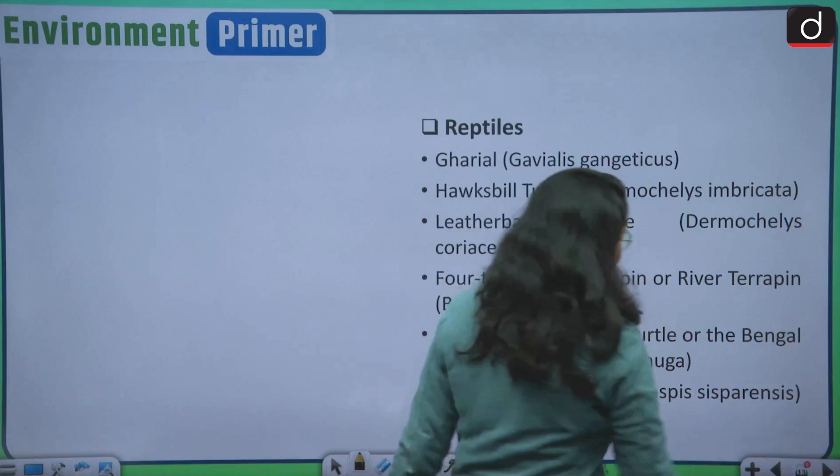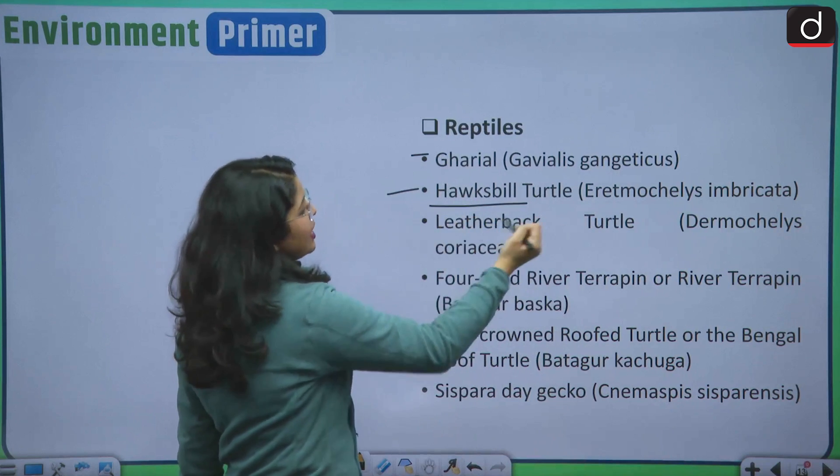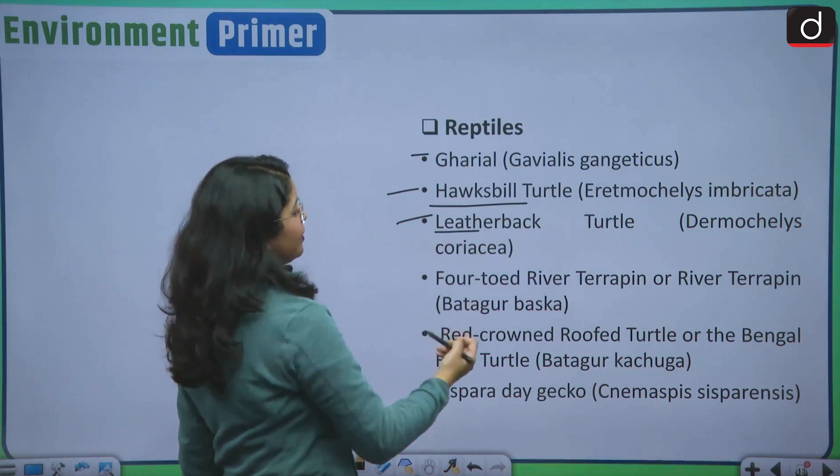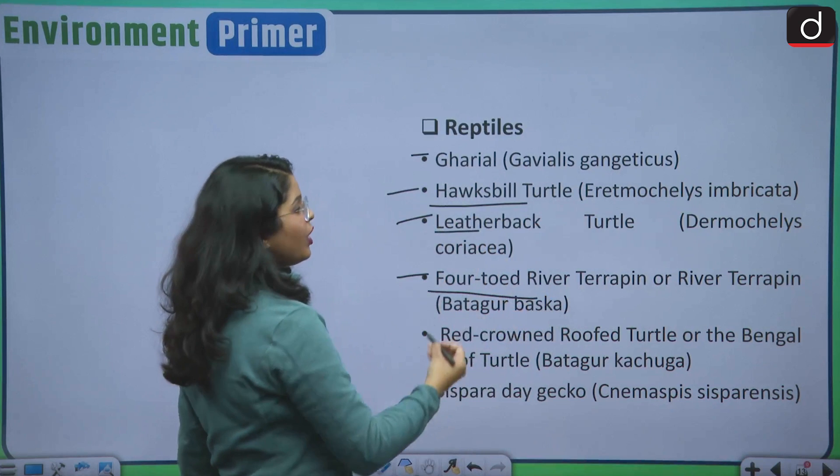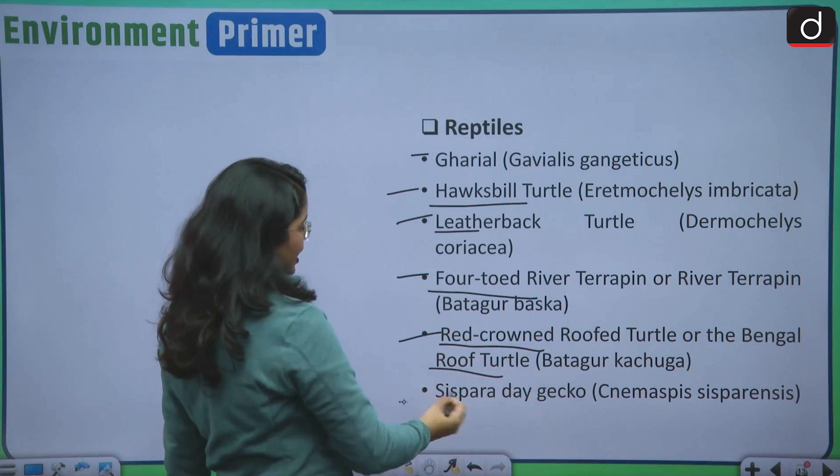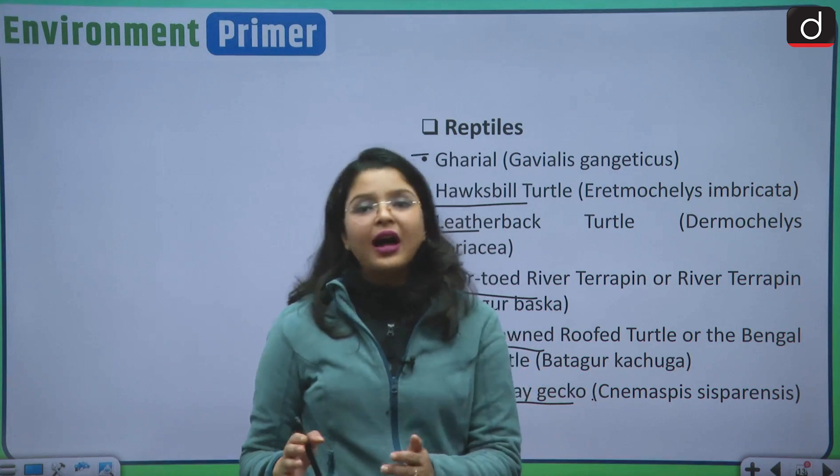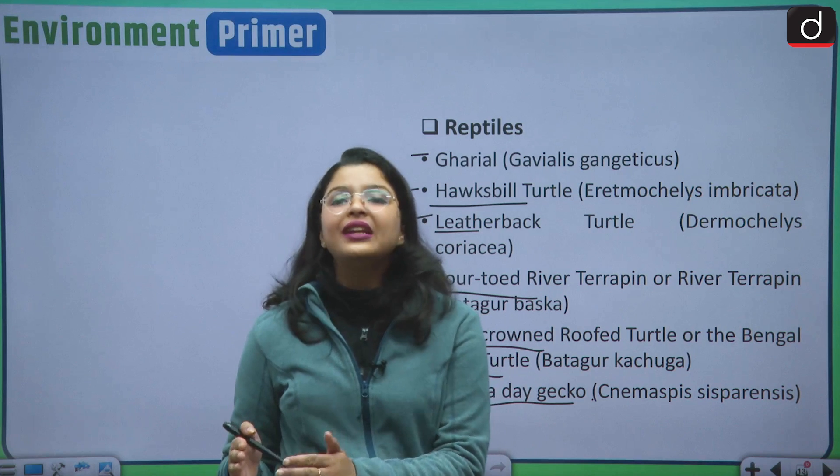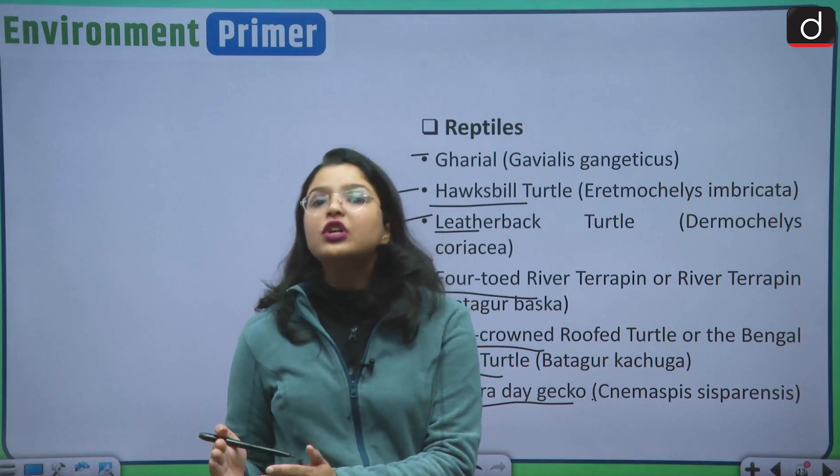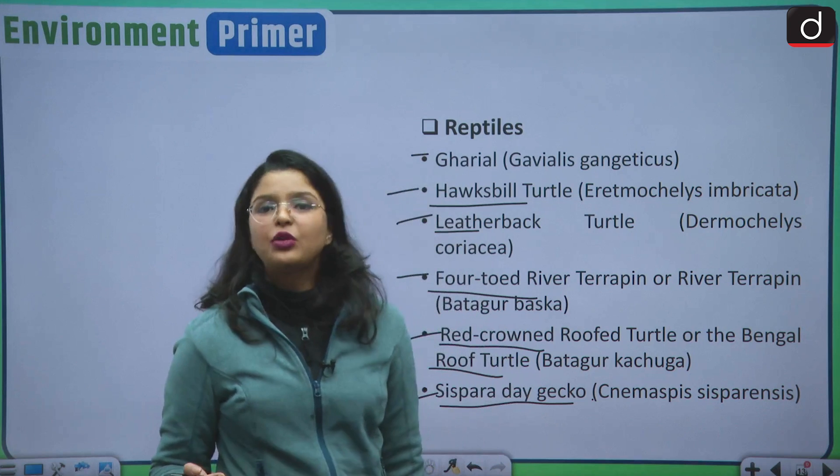Then moving forward to the Reptiles. Then Indian Gharial, Hawksbill Turtle, Leatherback Turtle, Four-Toed River Terrapin or River Terrapin. Then Red-Crowned Roofed Turtle or the Bengal Roof Turtle. Then Cispara Day Gecko. All of these species are endangered in India. Not only endangered, they are on the verge of extinction in India as has been determined by the IUCN red list.